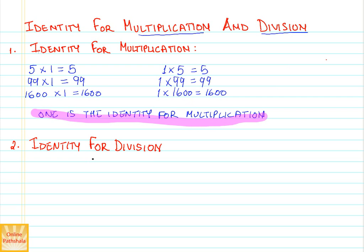In this case, again, we will try to divide a number by 1. Let us say that we divide 5 by 1. We still get the number 5. Similarly, when I divide 99 by 1, I still get the number 99 back.